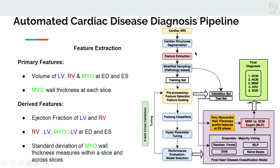The pipeline works as follows: from the cardiac MRI, we use our segmentation model to get segmentations, then a feature extraction module extracts features. The training set is split into training and validation sets for model selection — picking the best classifier for 5-class classification and tuning hyperparameters. Pre-processing involved feature selection, feature scaling, training classifiers, and hyperparameter tuning. We used 5-fold cross-validation for model selection, feature selection, and hyperparameter tuning.